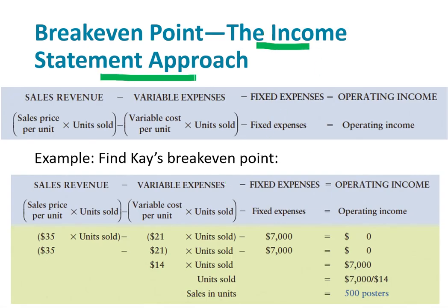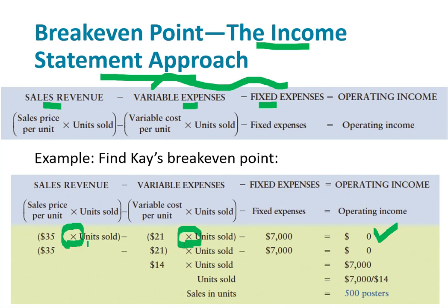Here's the income statement approach, which you may encounter on a homework question. Sales revenue minus variable expenses minus fixed expenses equals operating income. If we're talking about breaking even, operating income is zero. We put X for the number of units being sold and solve for X — it turns out to be 500 posters. The income statement approach simply sets everything to zero and solves a straightforward algebraic equation.